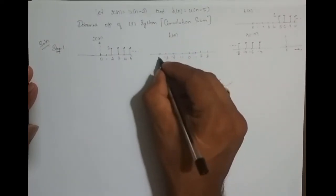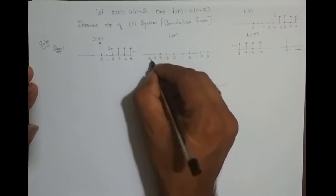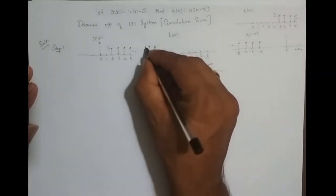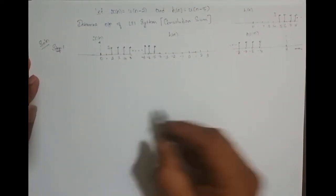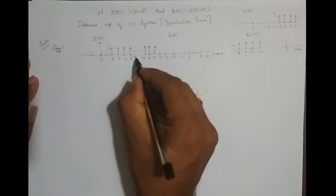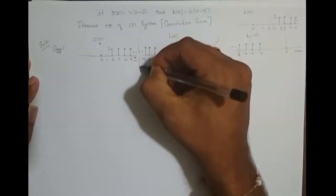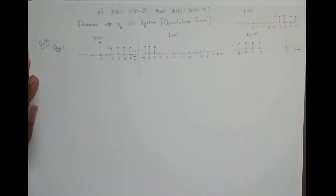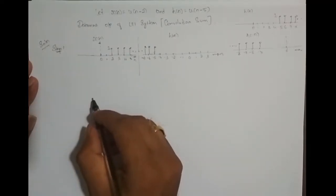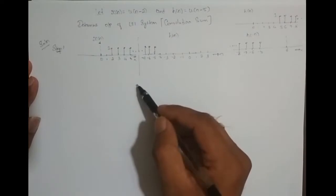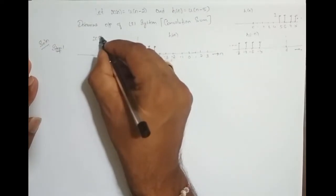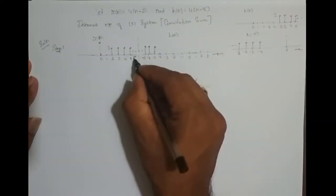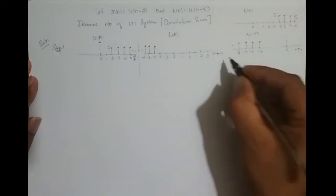So h(-n) starts from around -5 and goes to minus infinity, with amplitude 1. This is n for x(n) and this is n for h(-n). Now I need to change the independent variable to k, so x(n) becomes x(k) and h(-n) becomes h(-k).